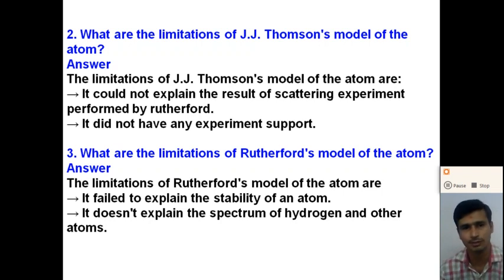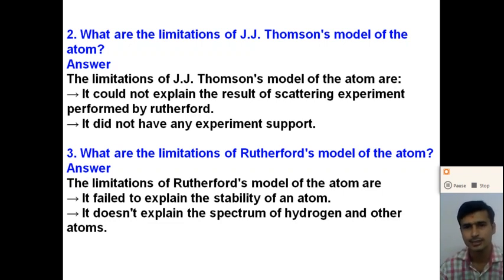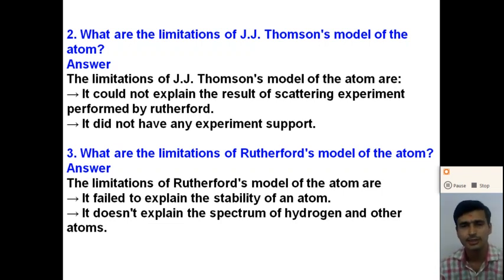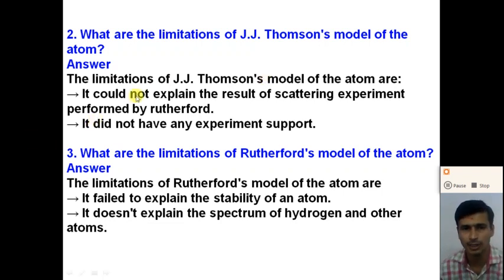What are the limitations of the J.J. Thomson model? According to static electricity, the continuous distribution of charge is not possible. So the first limitation is that, according to static electricity, continuous distribution of positive charge over a sphere is not possible. Also, J.J. Thomson's model could not explain the results of the scattering experiment performed by Rutherford.